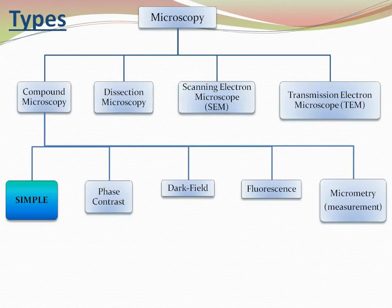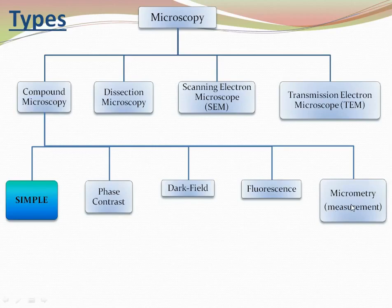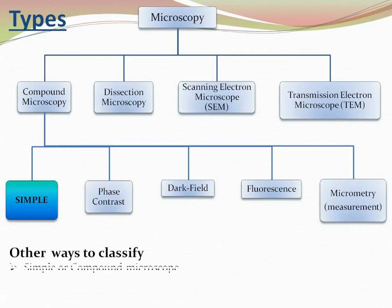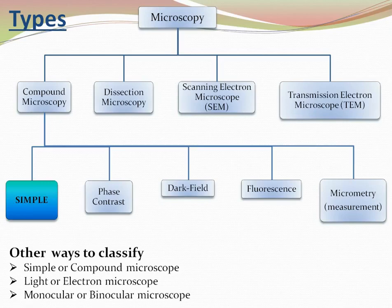Types of microscope include compound microscopy and dissection microscopy. In electron microscopes, we have scanning electron and transmission electron microscopes. In compound microscopes, we have simple microscope, phase contrast, dark field, fluorescent, and micrometry. Micrometry means we can measure the size of different cells and organisms. Another classification: simple or compound, light or electron, monocular or binocular microscope.